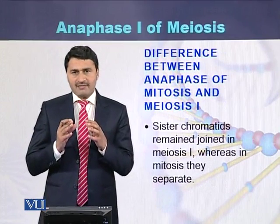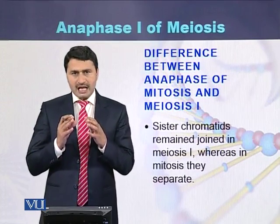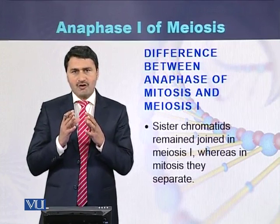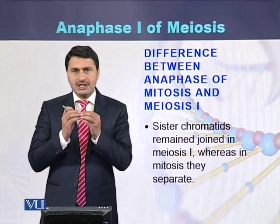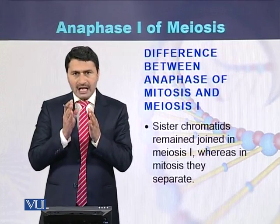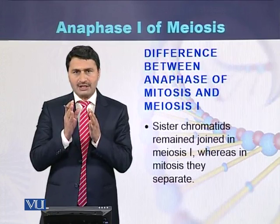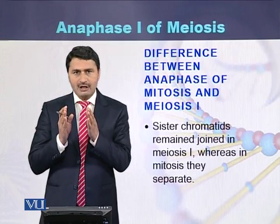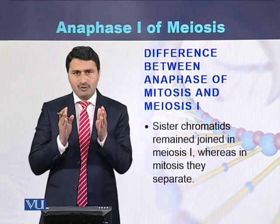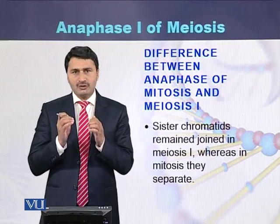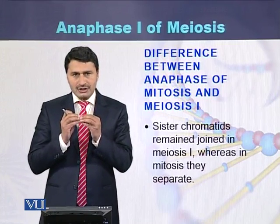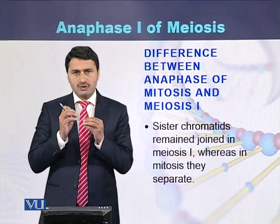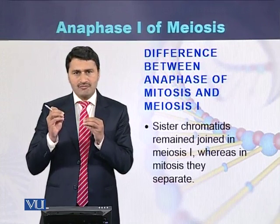The difference between anaphase of mitosis and anaphase of meiosis 1: In anaphase of mitosis, the centromere splits into two parts and one of the sister chromatids moves towards one pole, while the second sister chromatid moves towards the second pole. But in meiosis, a chromosome that consists of two chromatids — called sister chromatids — moves towards one pole as a unit.